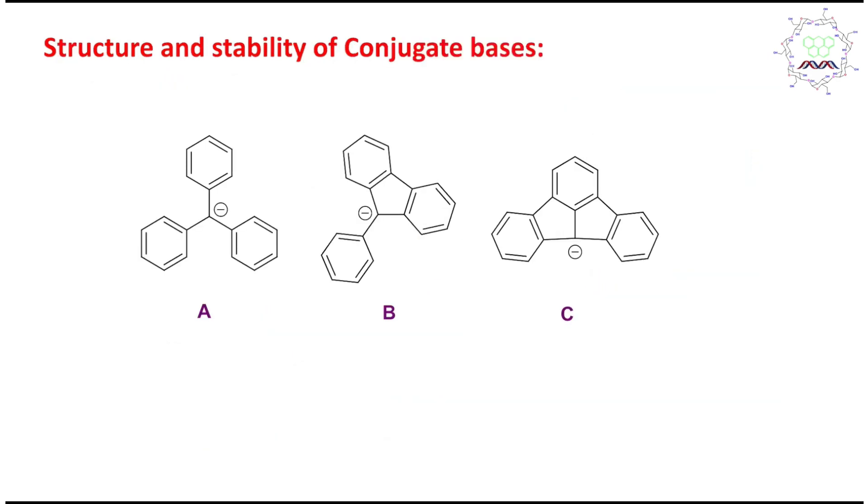Now, whenever we say acidity of a compound, we need to see the conjugate base. For example, this is the acid HA, its conjugate base is A minus because it releases one proton and produces this A minus. This is the conjugate base or CB. Remember student, whenever you are asked about the acidity comparison, just instantly go to the conjugate base comparison.